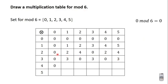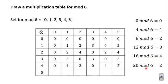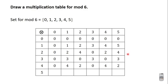4 times 0 is 0; 0 mod 6 is 0. 4 times 1 is 4; 4 mod 6 is 4. 4 times 2 is 8; 8 mod 6 is 2. 4 times 3 is 12; 12 mod 6 is 0. 4 times 4 is 16; 16 mod 6 is 4. 4 times 5 is 20; 20 mod 6 is 2 because 20 divided by 6 gives us 3 remainder 2.